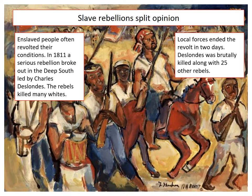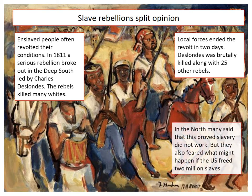Their heads were put on spikes along the river where the rebellion took place. Those rebellions caused fear throughout the United States — in the South, where the economy was so driven by slave plantations, but also in the North. In the North, many people said it proved slavery didn't work because if the enslaved people were treated better, they wouldn't have rebelled. But even in the North, there was racism, and they feared what might happen if the US immediately freed two million slaves. So slave rebellions, despite being applauded in some places, didn't completely win people over.